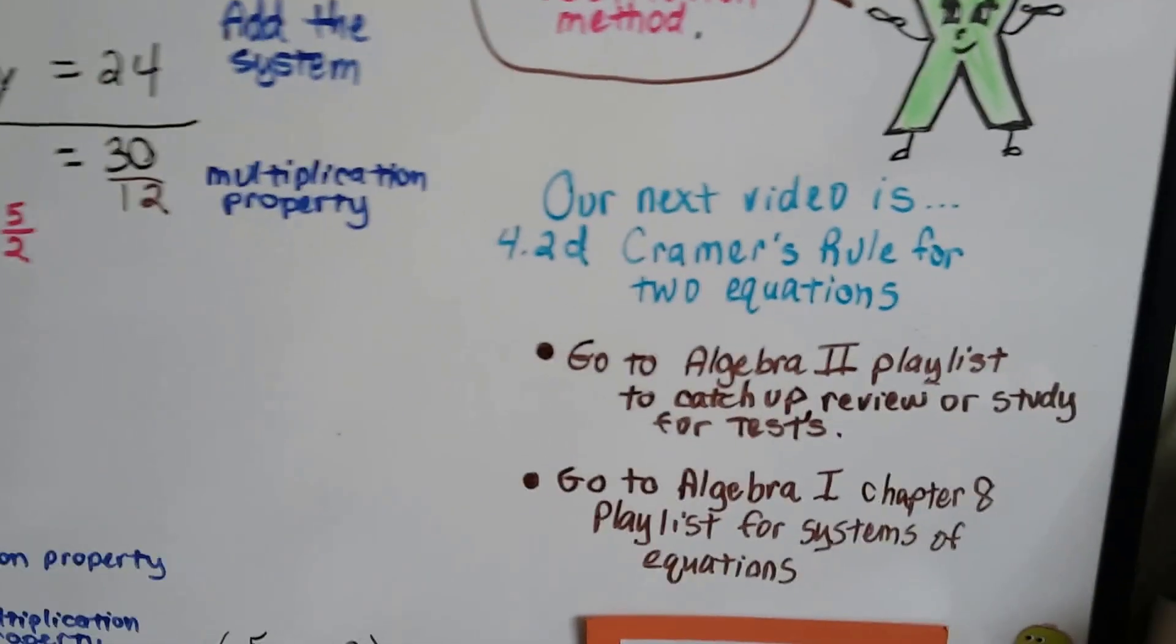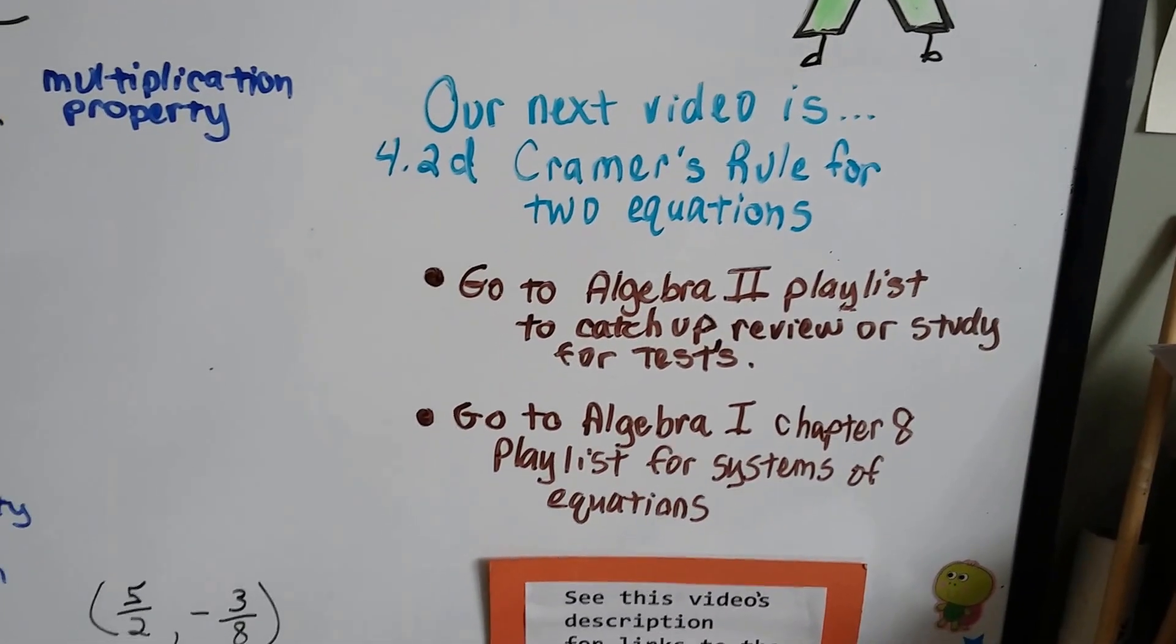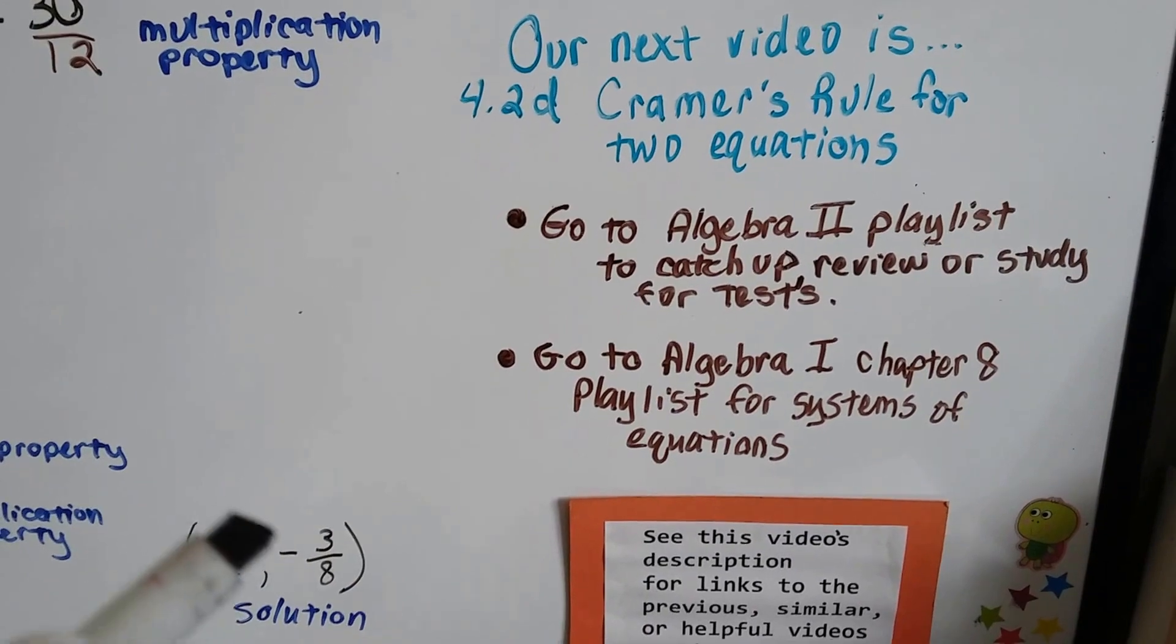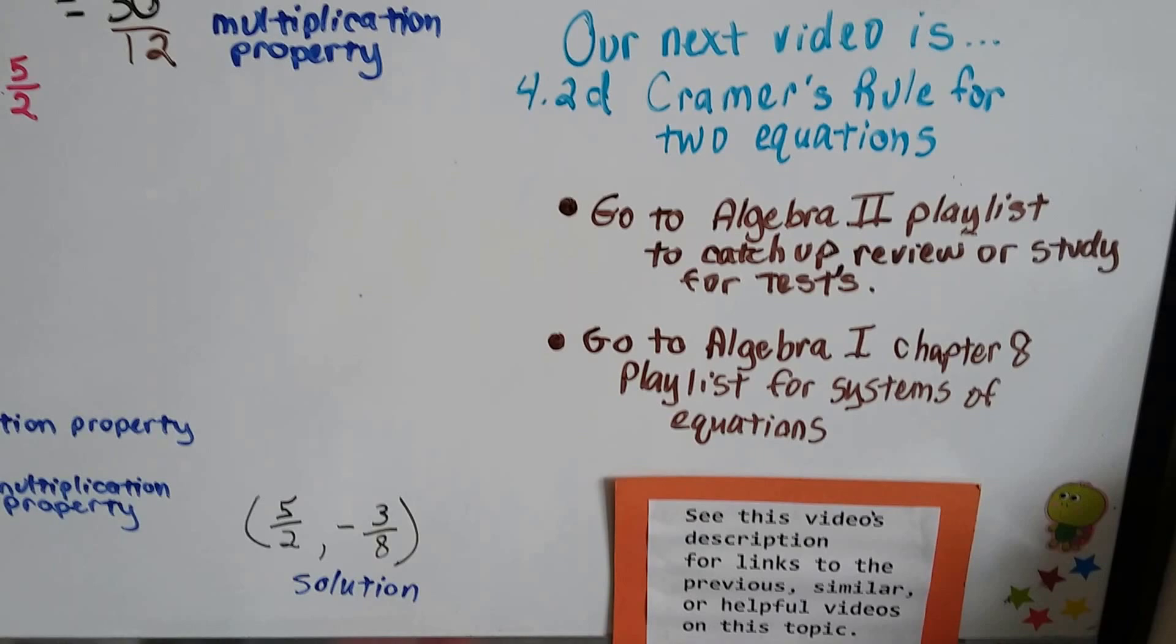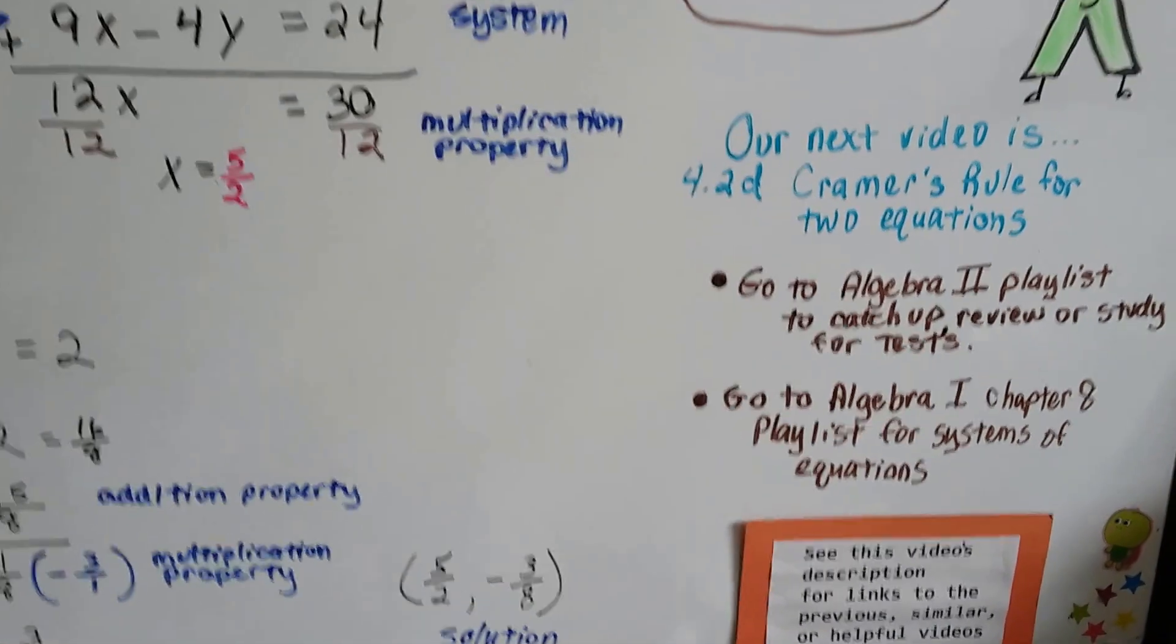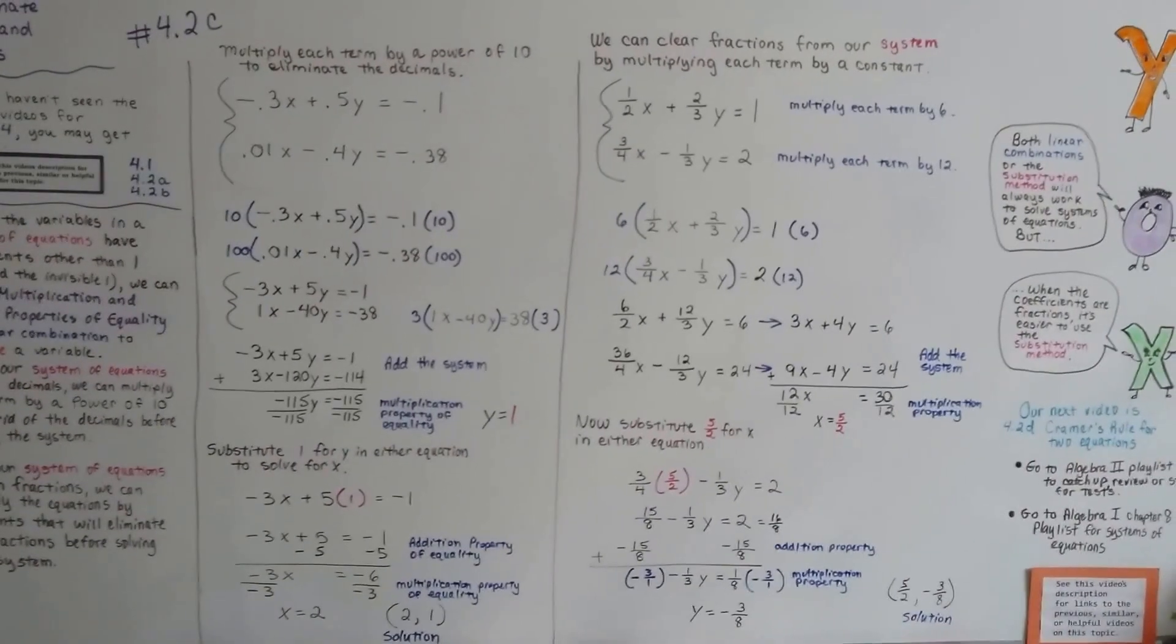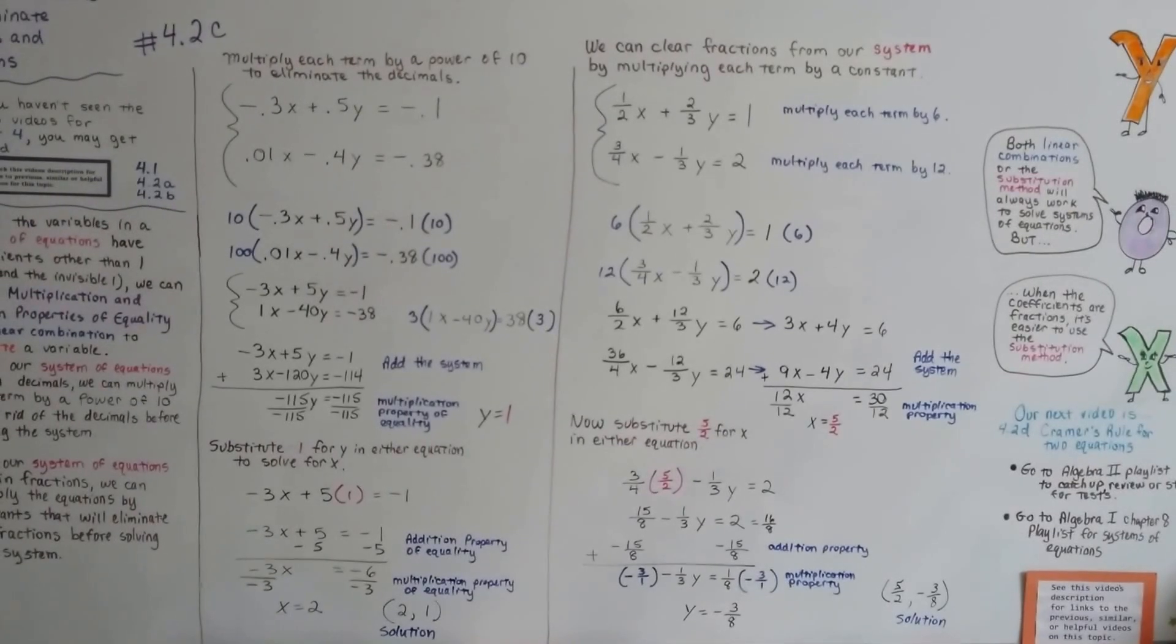Our next video is 4.2d, and we're going to talk about Cramer's rule for two equations. I'm going to add this video to the Algebra 2 playlist so you can use it for studying, review, or for catching up on the videos you've missed. There's going to be a link to the Chapter 8 playlist from Algebra 1 for Systems of Equations because I talked about all of this in Algebra 1. So you'll be able to watch that also for some extra deep learning. Maybe I said it in a different way or used different problems. Maybe I even used a problem that you've got in your textbook. So keep trying, and I'll see you in the next video.